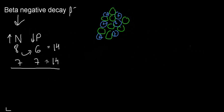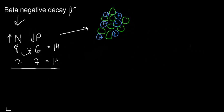This would be ideal. In this specific example, the isotope with six protons and eight neutrons would want to undergo this process. But how can I take a neutron and essentially turn it into a proton?